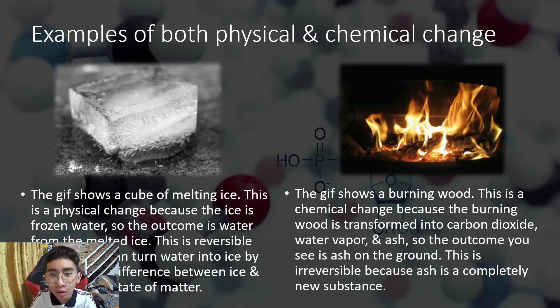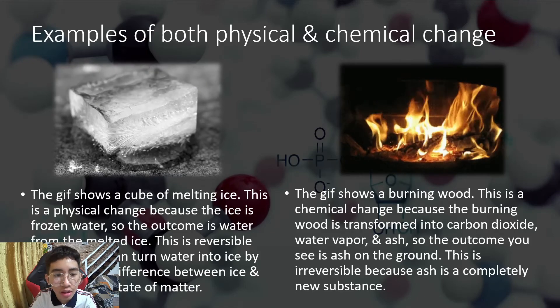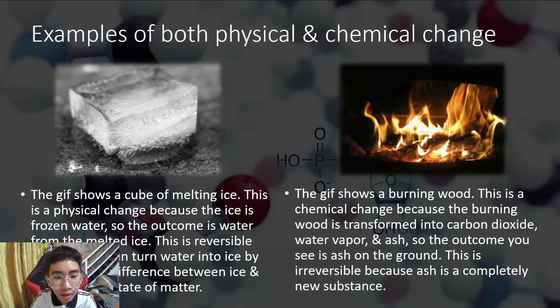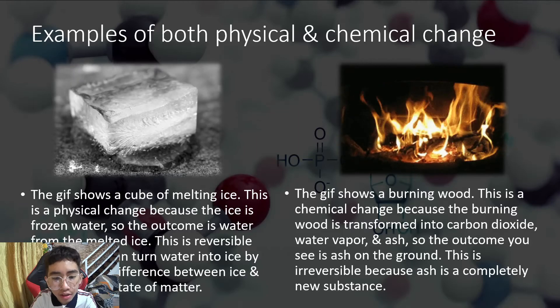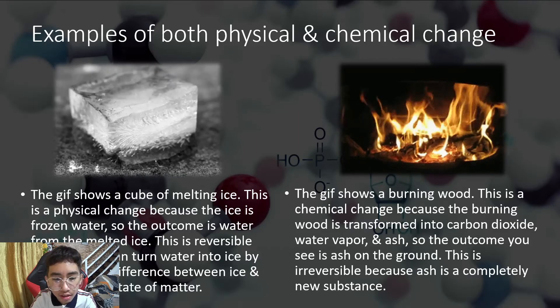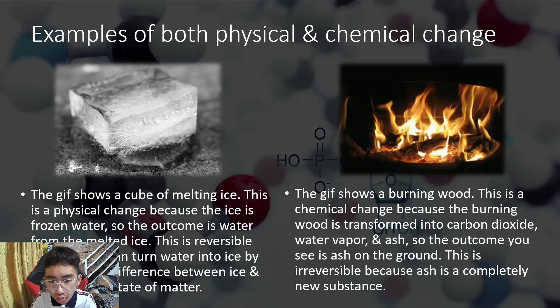Examples of both physical and chemical change: The GIF shows a cube of melting ice. This is a physical change because the ice is frozen water, so the outcome is water from the melted ice. This is reversible because you can turn water into ice by freezing. The difference between ice and water is their state of matter.